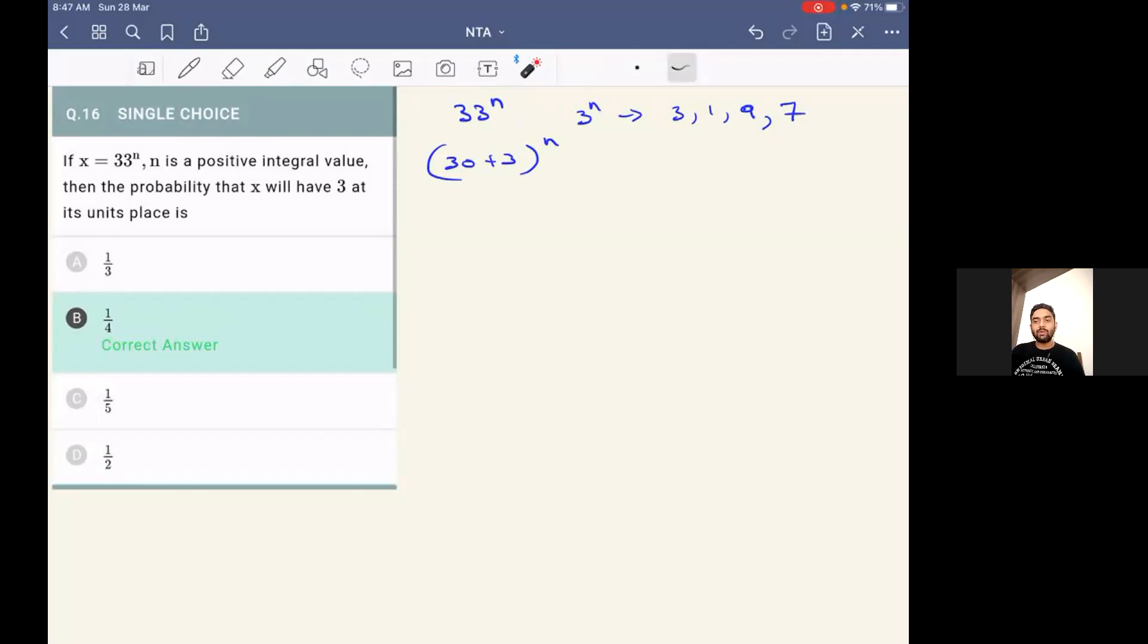Like for example, 3 power 1 is 3. 3 power 2 is 9. 3 power 3 is 27 where the unit place will be 7. Similarly, 3 power 4 will be 81, so unit place will be 1. 3 power 5 again will have unit place as 3. So after that it will keep on repeating itself.